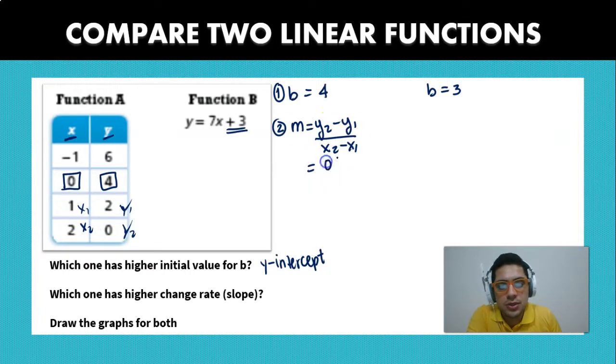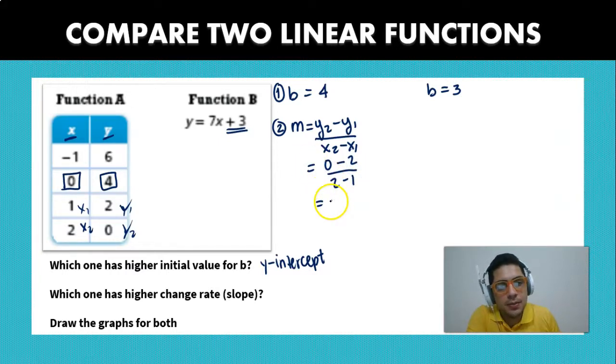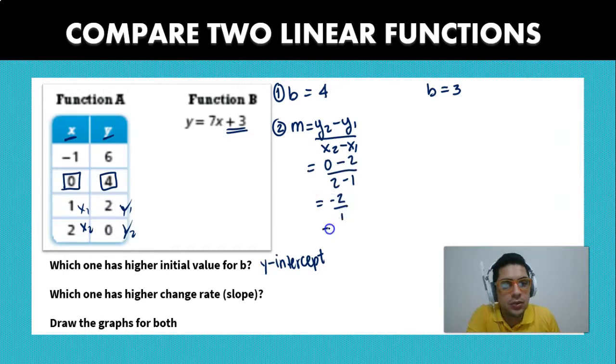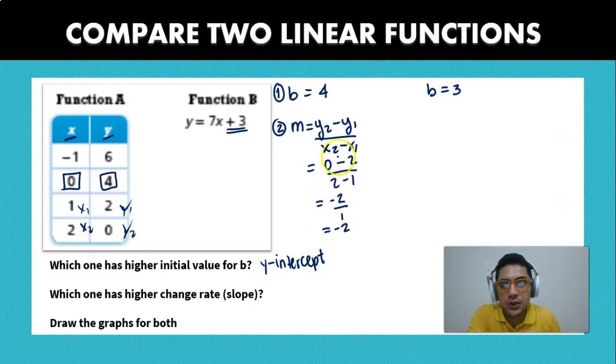So y2 is going to be 0 minus 2 and then here it's going to be 2 minus 1. So that is going to be minus 2 divided by 1, which means that our slope is going to be minus 2 on the first one.